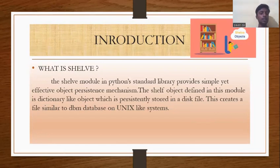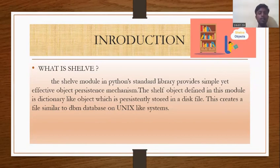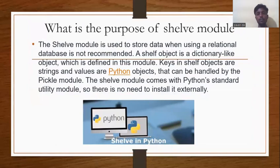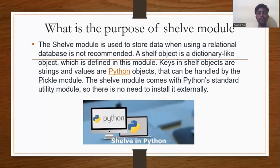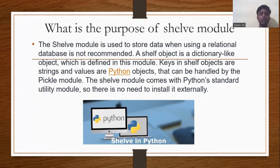Now, the introduction — what is shelf? The shelf module in Python's standard library provides a simple yet effective object persistence mechanism. The shelf object defined in this module is a dictionary-like object which is persistently stored in a disk file. This creates a file similar to a DBM database on Unix-like systems. The shelf module is used to store data when using a relational database is not recommended. Keys in shelf objects are strings and values are Python objects that can be handled by the pickle module. The shelf module comes in Python's standard library, so there is no need to install it externally — it is already an inbuilt module.